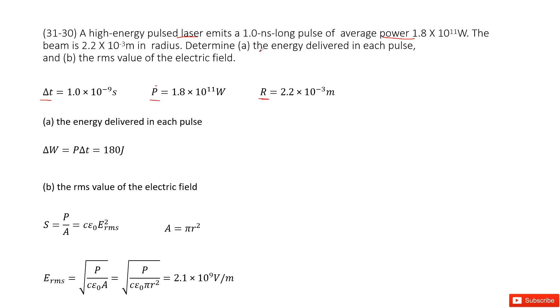Determine the energy delivered in each pulse. So now you can see the P power is given, delta T is given. So very easily you can get the energy delivered by each pulse. This is delta W, energy in one pulse. Use the power times time duration. So you get the answer there.